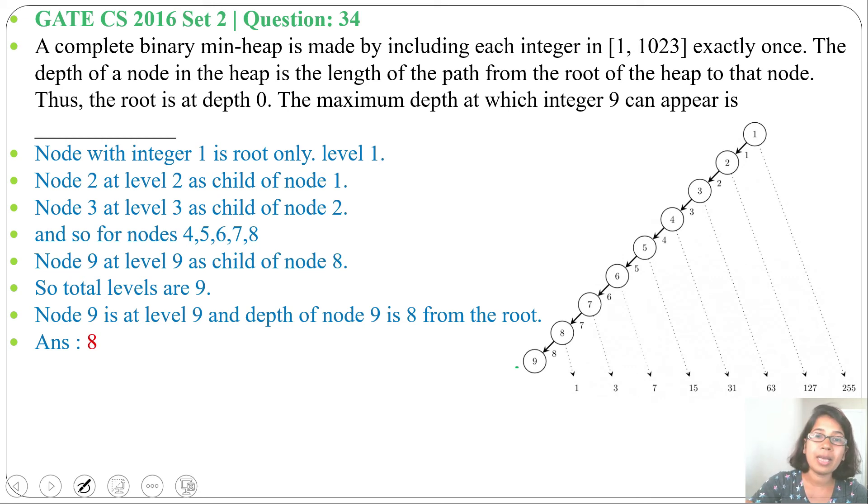Maximum depth of 9 will be 8. We can design in different ways as it is asking maximum depth, so maximum depth will be this. Up to 9, any number can be present at maximum depth 8. As this is a complete binary tree, maximum height will be the same. Answer is 8.